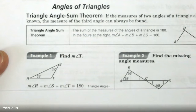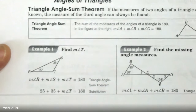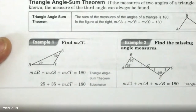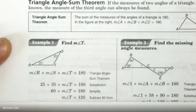We know which angles — we know R and S. The next step is to substitute that in. And then we need to solve for the measure of angle T. We add up 25 and 30, subtract 60 to get T by itself. We find out that the measure of angle T equals 120.